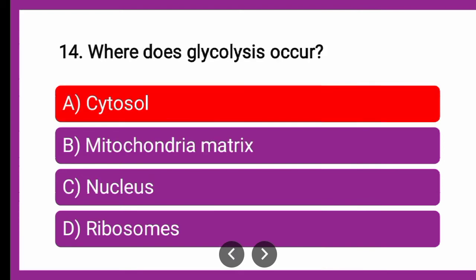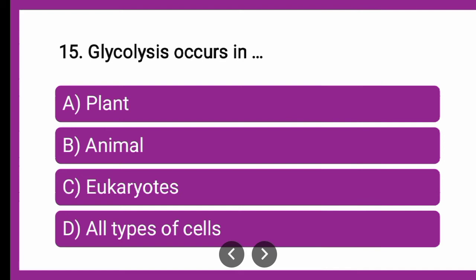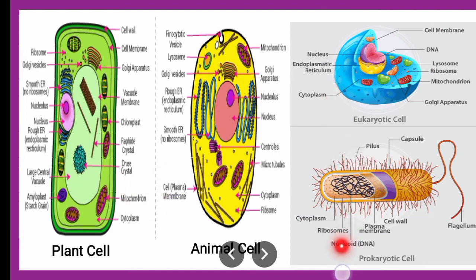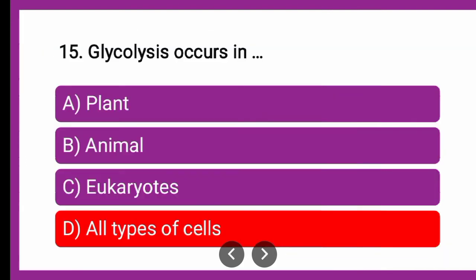Next question: Glycolysis occurs in — whether it occurs in plants, animals, eukaryotes, or all types of cells? The correct answer involves plant cells, animal cells, eukaryotes, and prokaryotes. Glycolysis occurs in almost all types of cells because glycolysis takes place when mitochondria are less in number or absent in a particular cell. The correct answer is all types of cells.